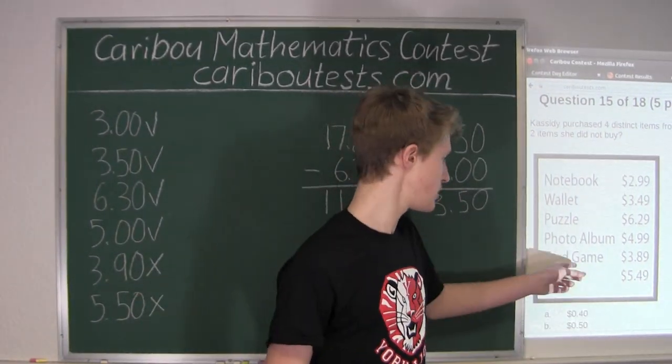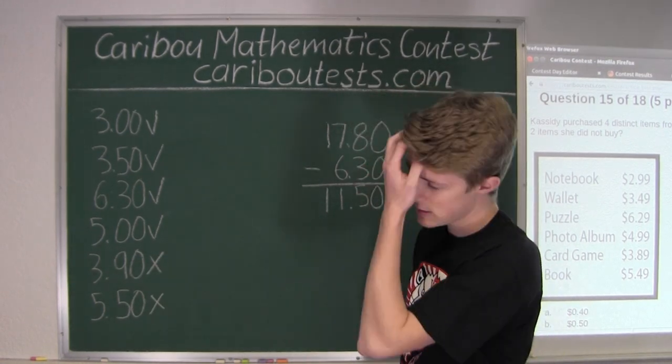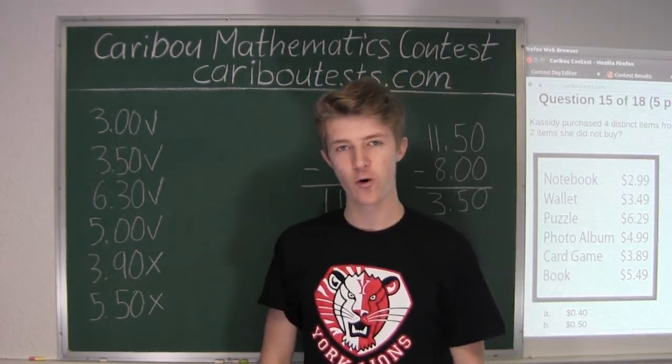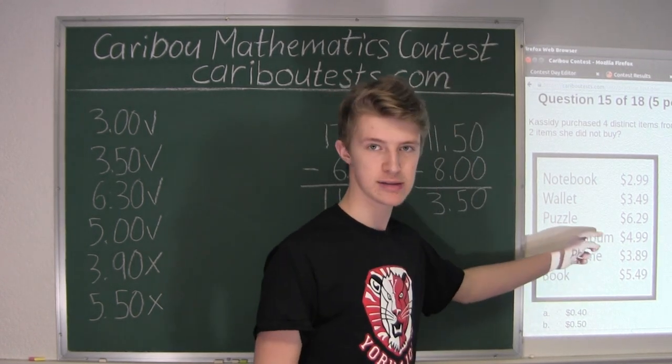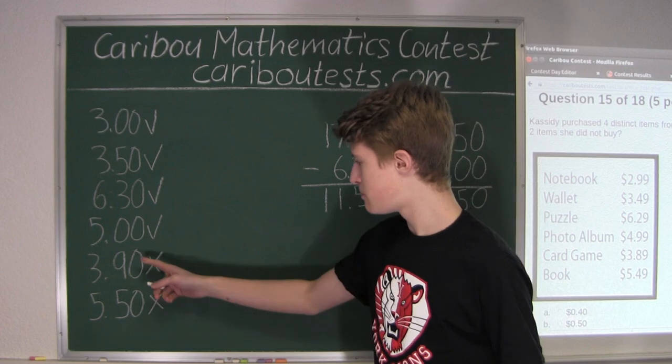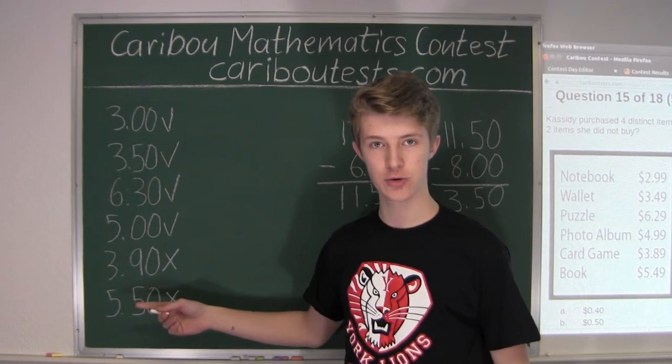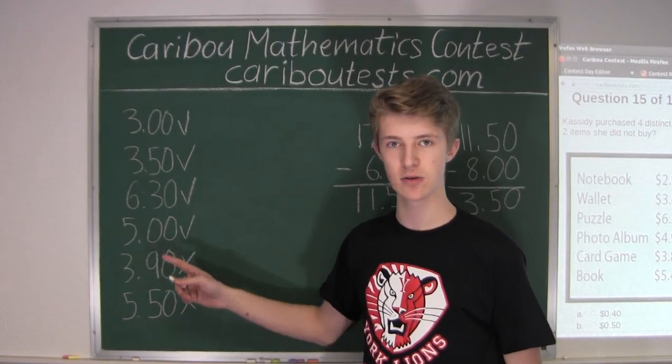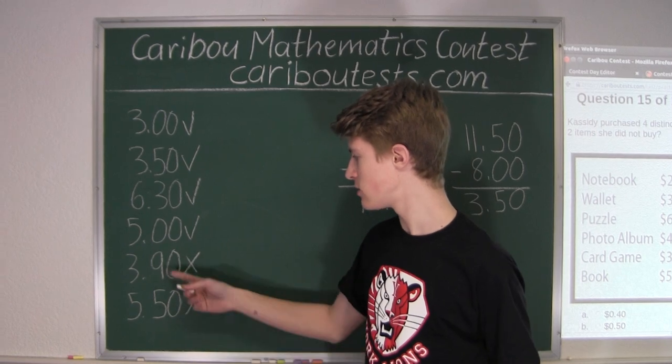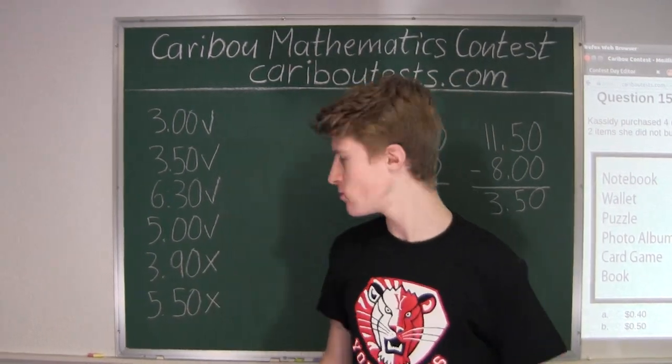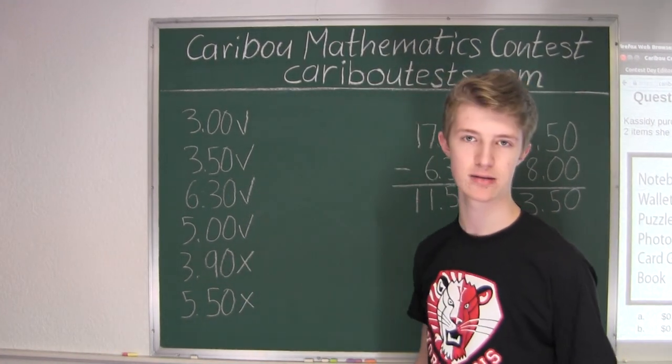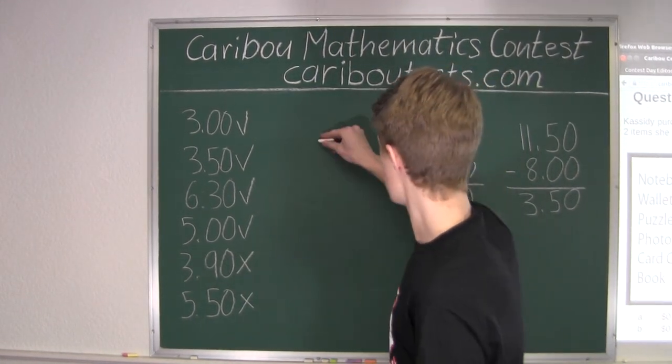Now, of course, we could find that difference by using the real prices, but since both prices are increased by one cent, then they cancel when you find the difference. So, it will be the same finding the difference here or here. So, we will just find the difference using these prices. Therefore, we have $5.50 minus $3.90.